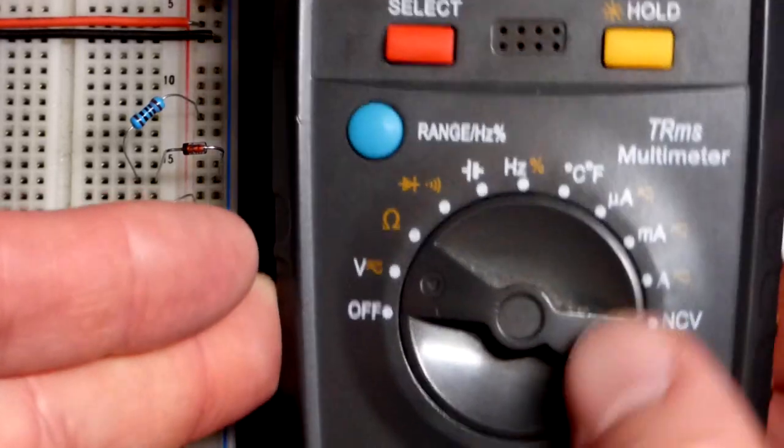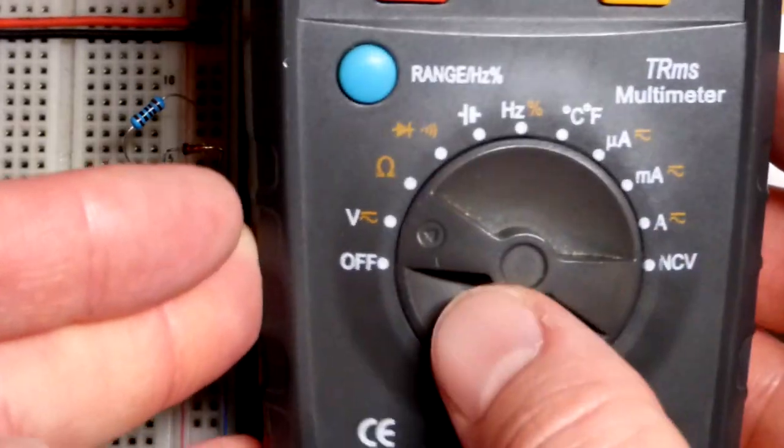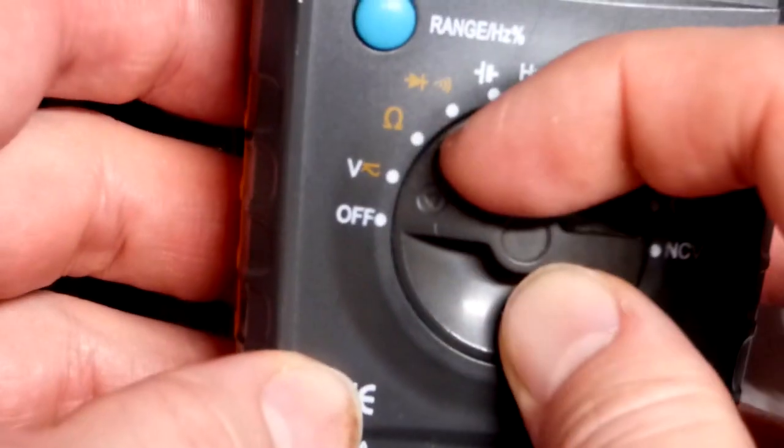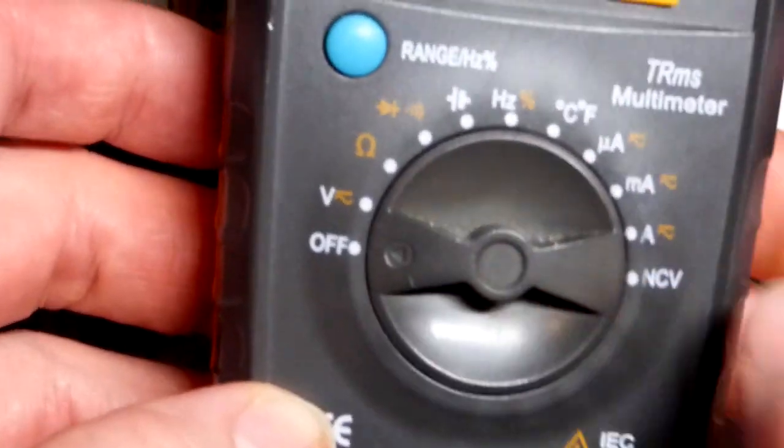Make sure when you're done using the multimeter that it's not set to measure current for one thing. If there's a power button, but otherwise if there's an off button, turn it to off.